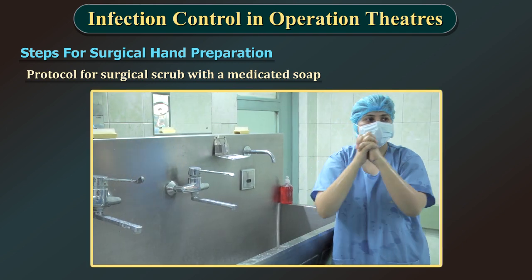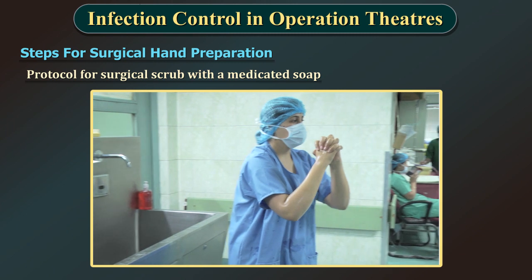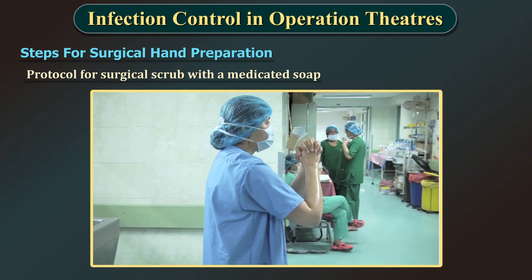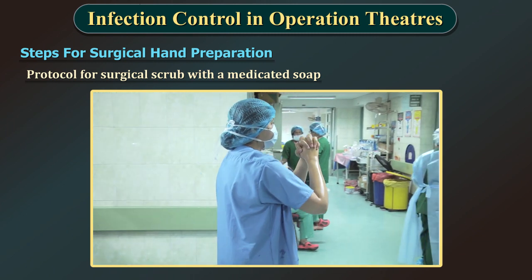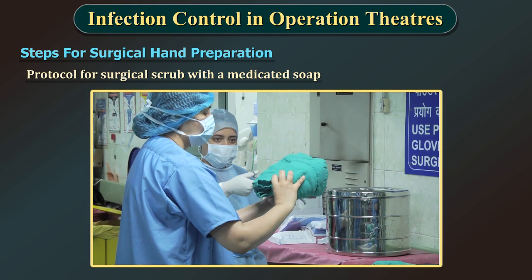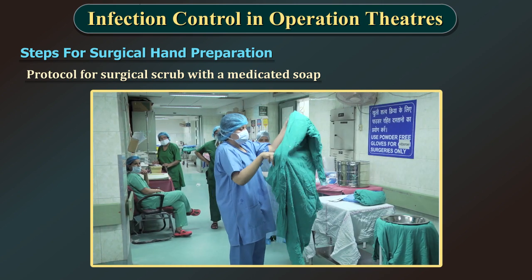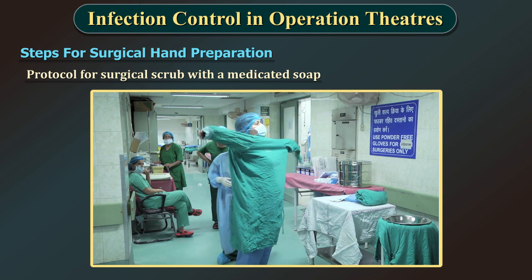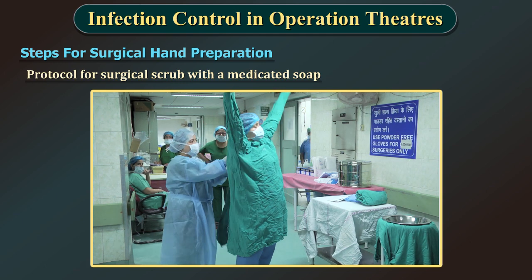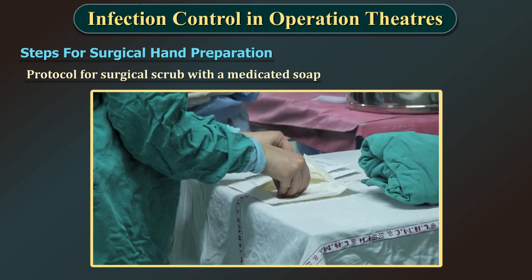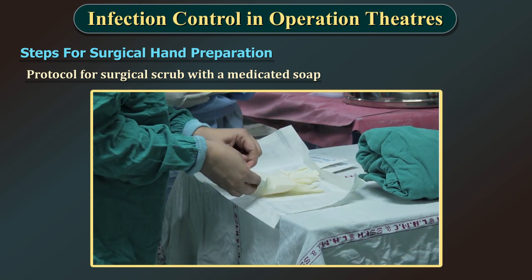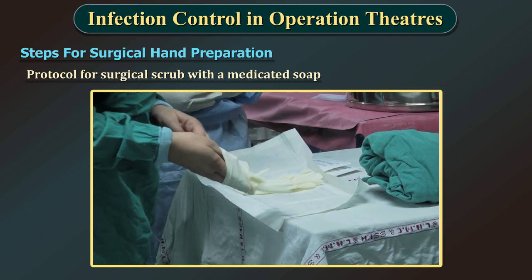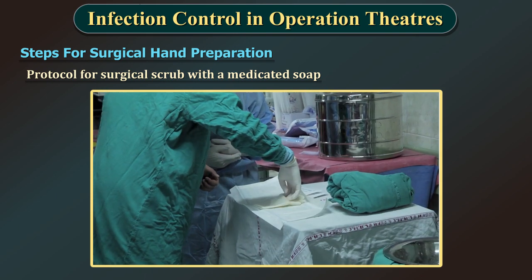Proceed to the operating room holding hands above elbows. During the scrub procedure, care should be taken not to splash water onto surgical attire. Once in the operating room, hands and arms should be dried using a sterile towel and aseptic technique before putting on gown and gloves. Correct aseptic technique should be followed to wear sterile gloves without contaminating the sterile surface.